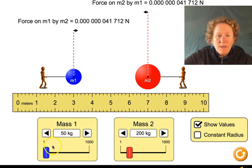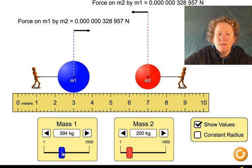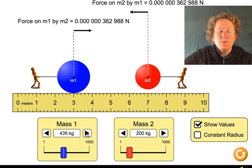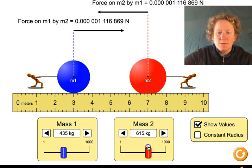We can control the masses of both objects by using the slider, or you can click back and forth if you want to adjust it to a particular number. So both of these masses can be controlled with the sliders.